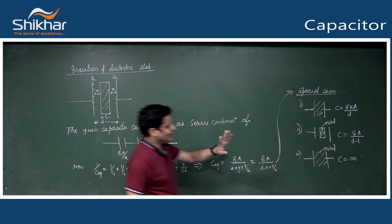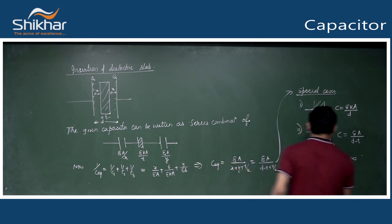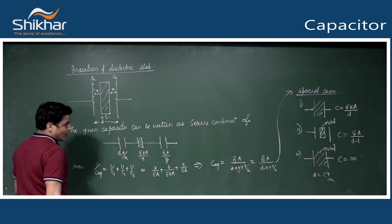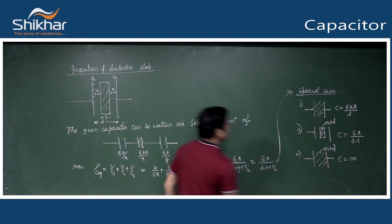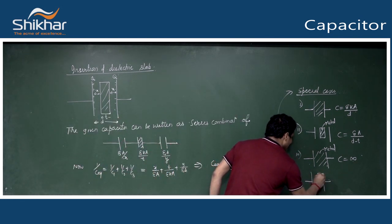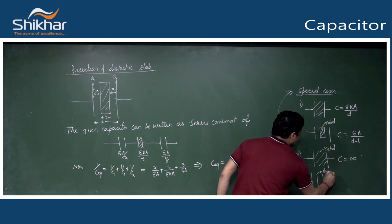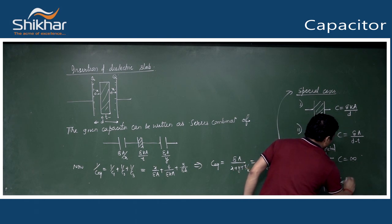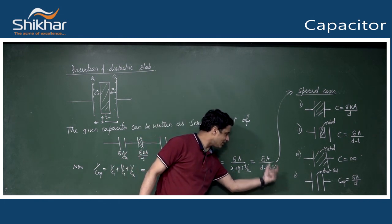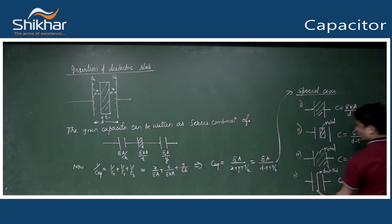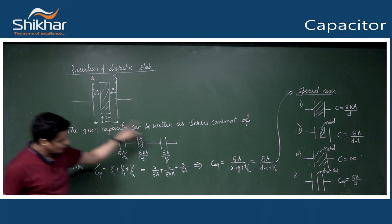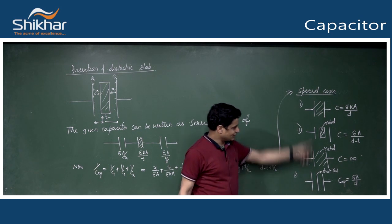If conductor fills completely, C is infinite meaning you can never fully charge it - any charge given will keep flowing. Special case 4: if a thin metallic sheet (t→0) is inserted, C_eq = ε₀A/d - no change occurs. Only a thick sheet changes the capacitance.